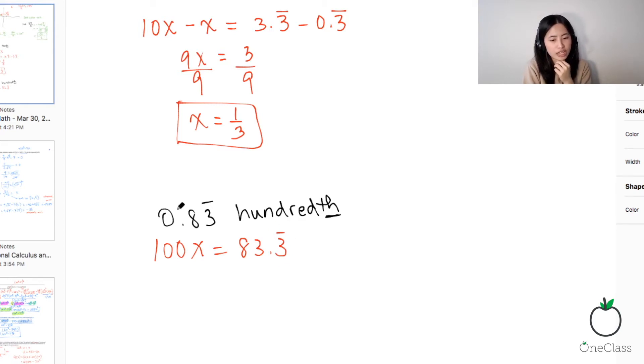So for me to get rid of this 3 over here, I would just have to move the decimal point to the right once because in that way, I would get 8.3. So when I subtract this from 8.3, it gets rid of this and this. So I get a whole number.